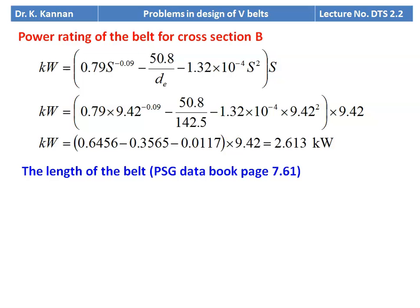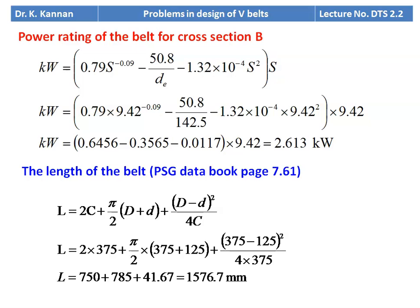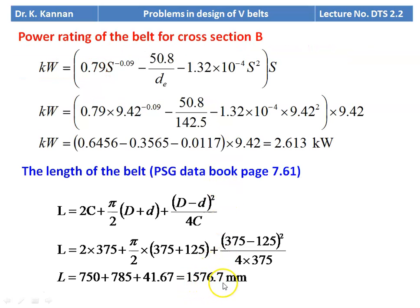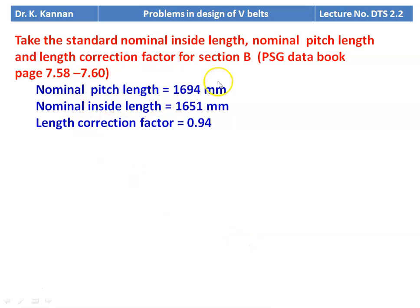Length of belt from equation page 7.61: L = 2C + (π/2)(D + d) + (D − d)²/4C, substituting all numerical values gives L = 1576.7 mm. From the PSG data book pages 7.58 to 7.60, next higher nominal pitch length for section B is 1694 mm, nominal inside length = 1651 mm, length correction factor = 0.94.